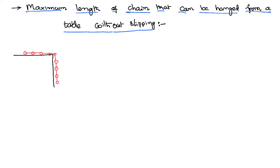Let us consider a chain having a total length capital L. We want to suspend a portion of the chain such that the chain is not going to slip down from the table. As some portion of the length is hanging, it is obvious that the remaining portion will be on the table.